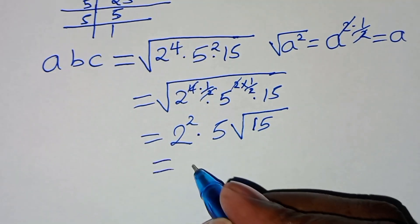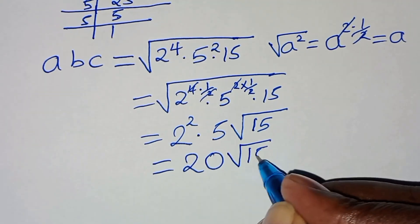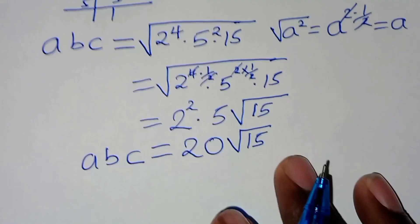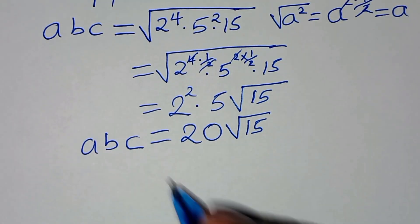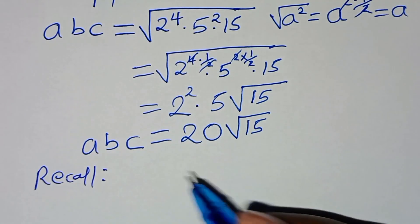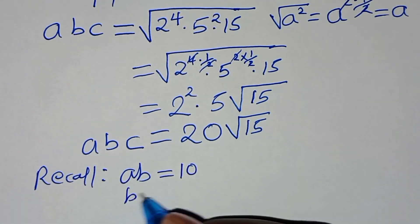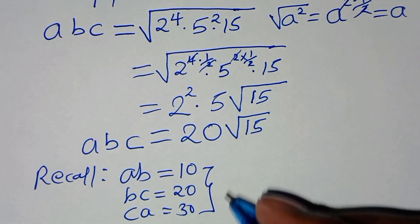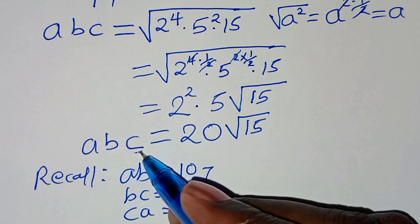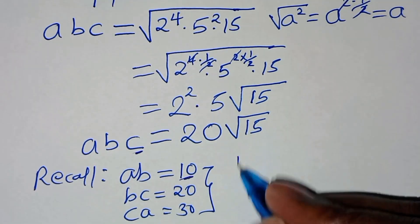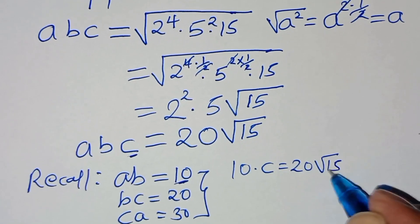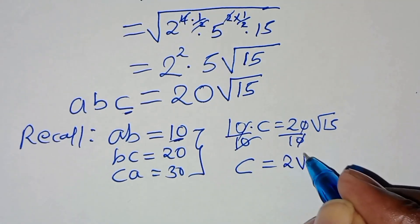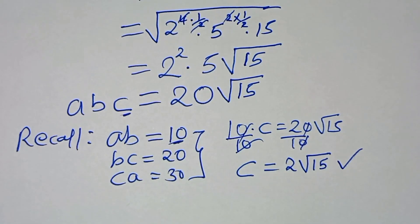So abc equals 20√15. Now let's calculate the individual values of a, b, and c. We have ab = 10, bc = 20, and ca = 30. We start by calculating c: ab times c equals 10 times c, and this equals 20√15. Dividing both sides by 10, c equals 2√15.